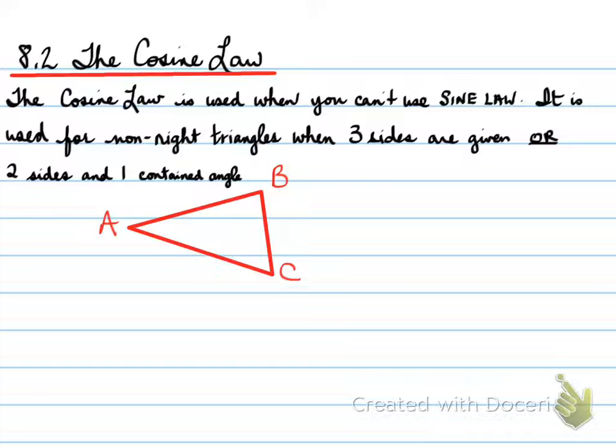So again you have a triangle ABC and you would be given all three sides and you have to find an angle. Or you're given two sides and one contained angle.